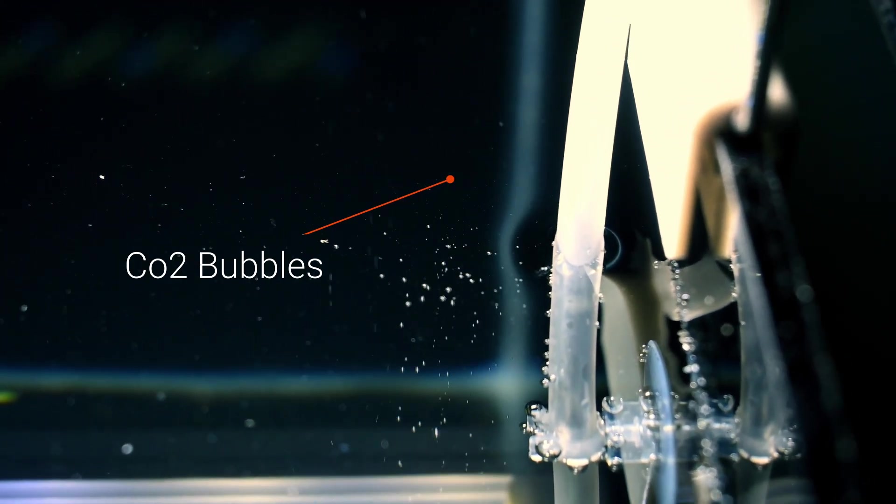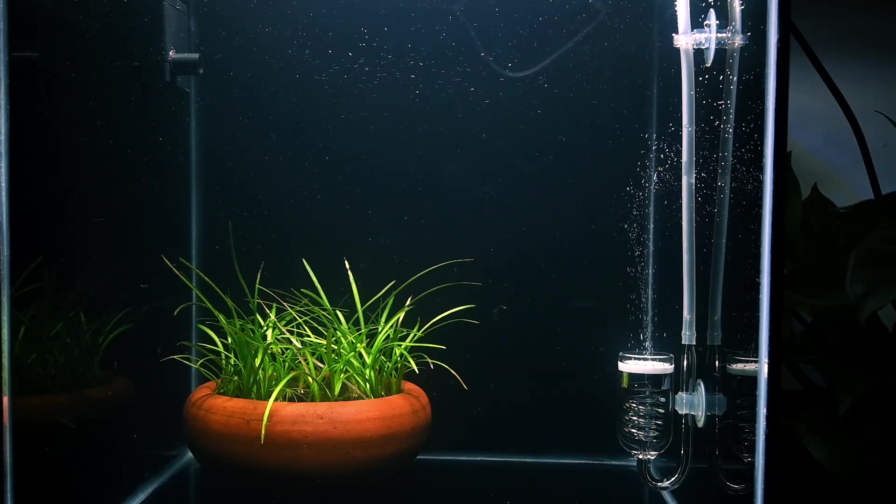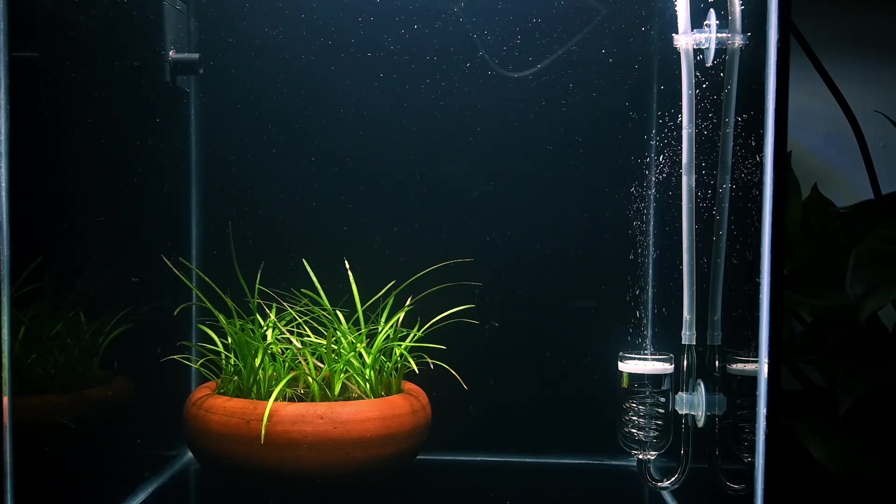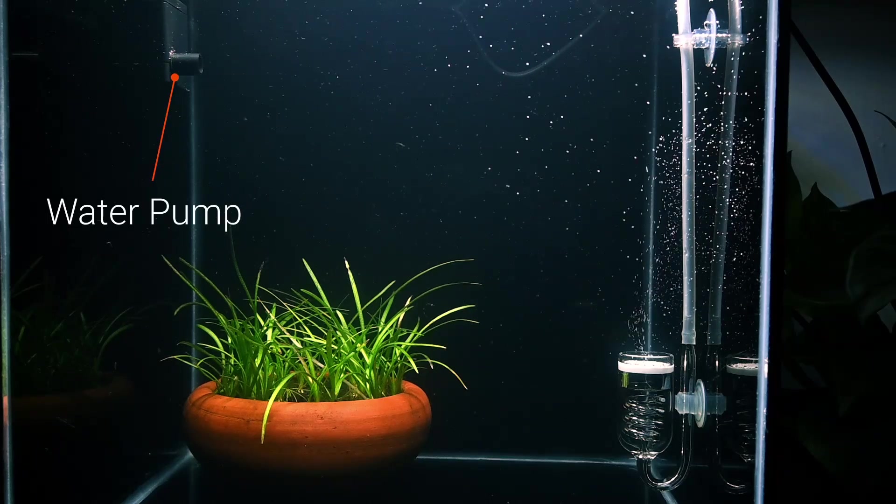The most common way to fix this issue is by positioning the CO2 diffuser against the water flow. This helps the bubbles stay in the water longer, giving them more time to dissolve.